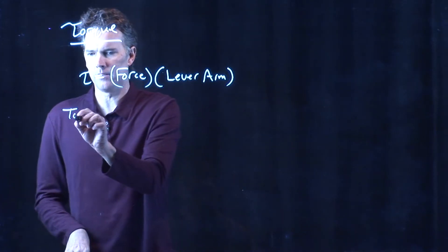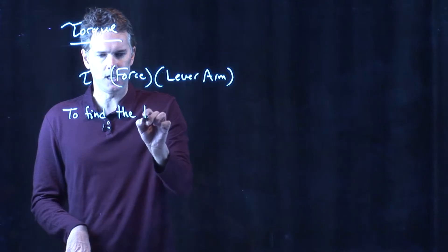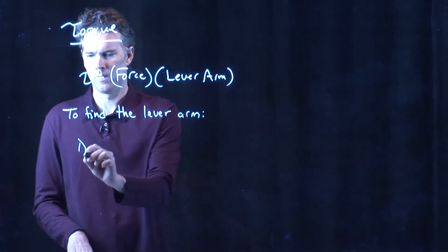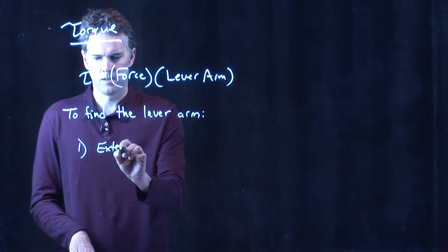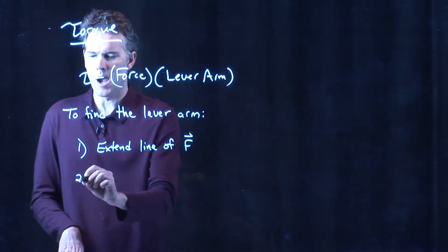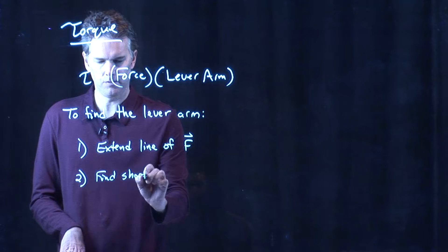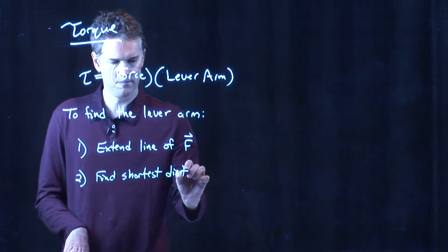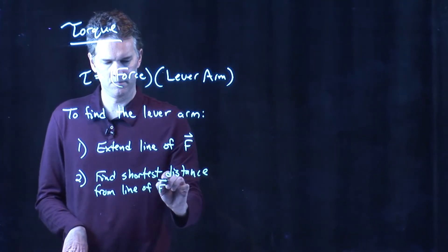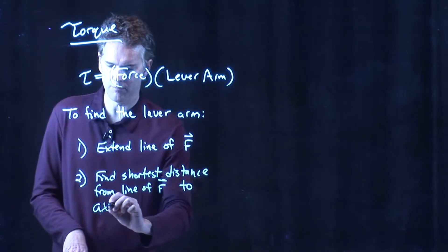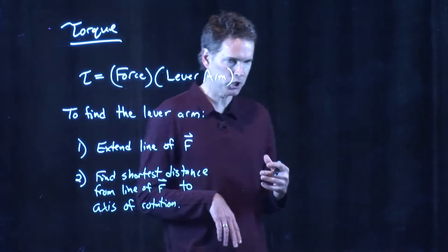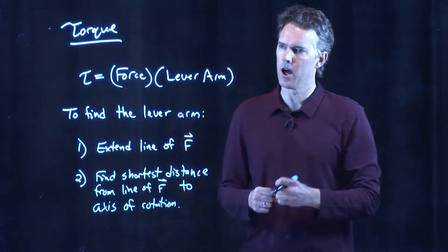It turns out there's a very nice prescription for finding the lever arm. What you do is the following: you extend the line of force F, and then you find the shortest distance from that line of force to the axis of rotation. Some textbooks call that line the line of action — same idea. What direction are you pulling on it or pushing on it?